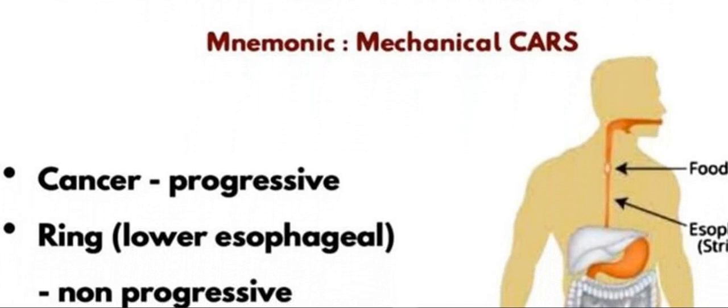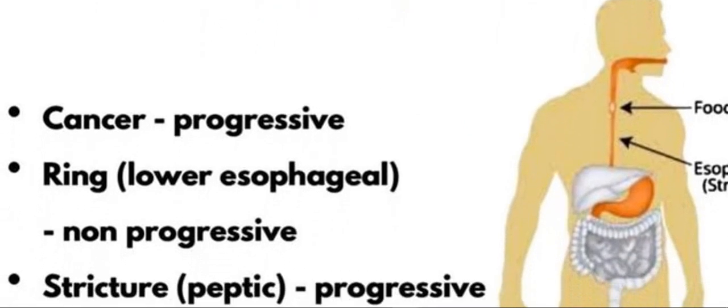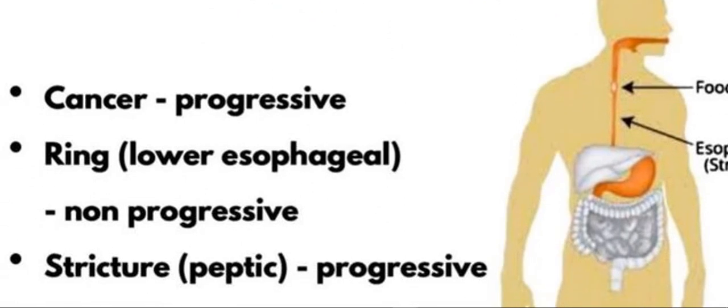The third and last letter is S, which stands for strictures. If any stricture formation occurs — whether esophageal or peptic stricture — this can also cause esophageal dysphagia. If the stricture is progressive, it causes more severe dysphagia.